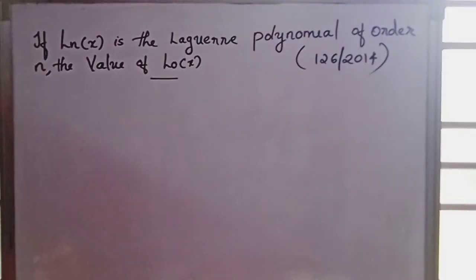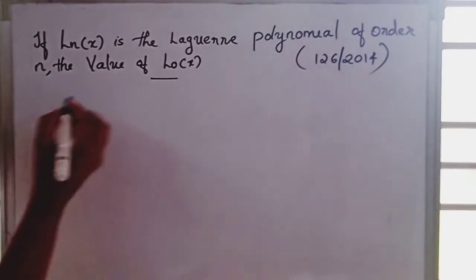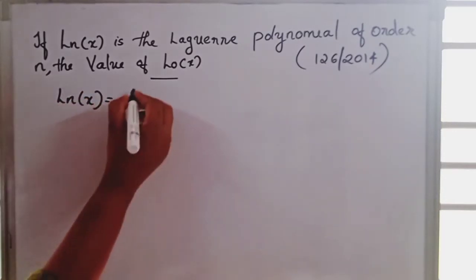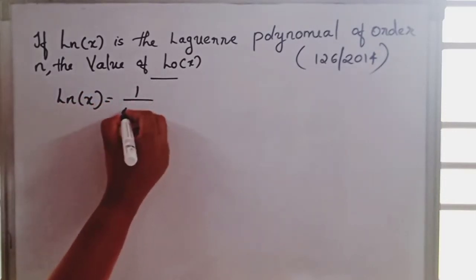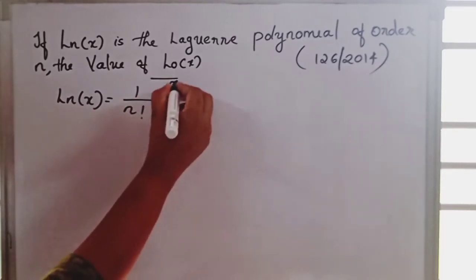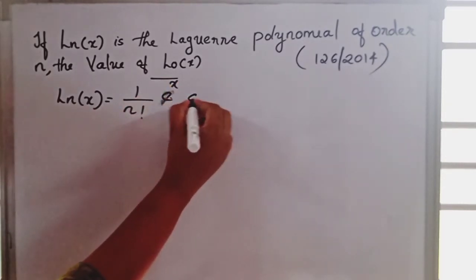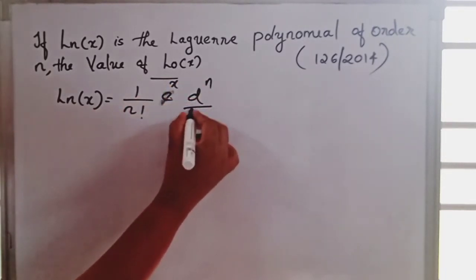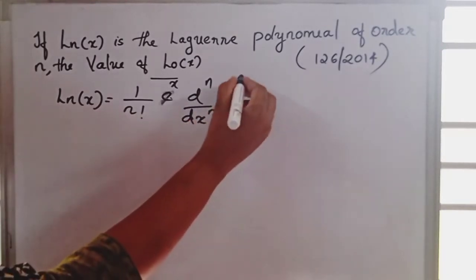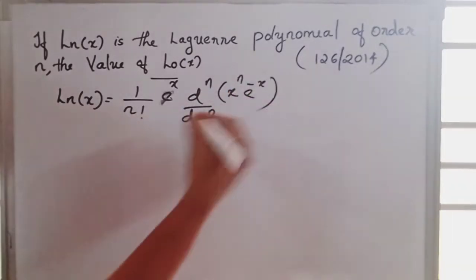If L_n(x) is the Laguerre polynomial of order n, then the value of L_0(x). Rodrigues' formula for L_n(x), the Laguerre polynomial, is: 1 by n factorial, e raised to x, d raised to n by dx raised to n, x raised to n, e raised to minus x.